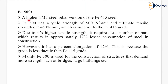FE500 is a higher TMT steel rebar version of the FE415 steel. FE500 has a yield strength of 500 N/mm² and an ultimate tensile strength of 545 N/mm², which is superior to the FE415 grade. Due to its higher tensile strength, it requires fewer bars, resulting in approximately 17% lesser consumption of steel. It has a percent elongation of 12%, making it less ductile than FE415. FE500 is mainly used for structures demanding more strength, such as bridges and large buildings.